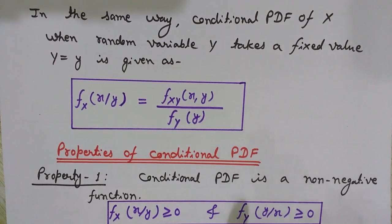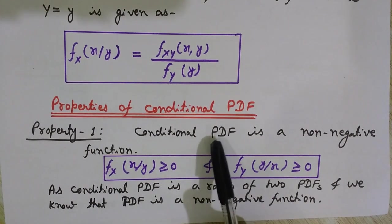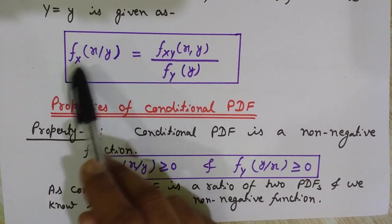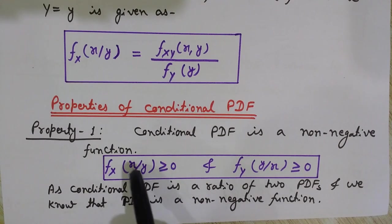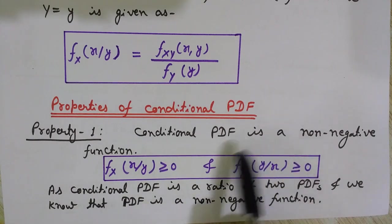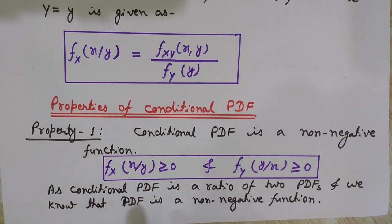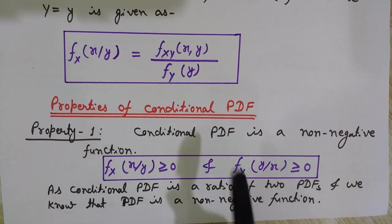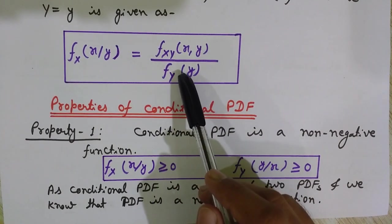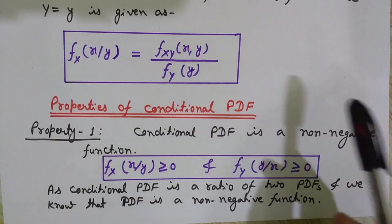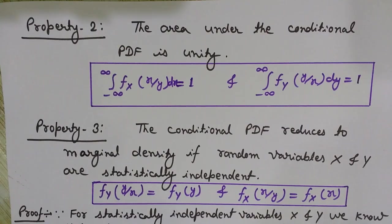Now we will see the properties of a conditional PDF. Property number one: the conditional probability density function is a non-negative function. Mathematically, f(x|y) ≥ 0 and f(y|x) ≥ 0. The reason is that the conditional PDF is a ratio of two probability density functions — the joint PDF divided by a marginal PDF — and since PDFs are non-negative functions, the ratio of two non-negative functions is also non-negative.